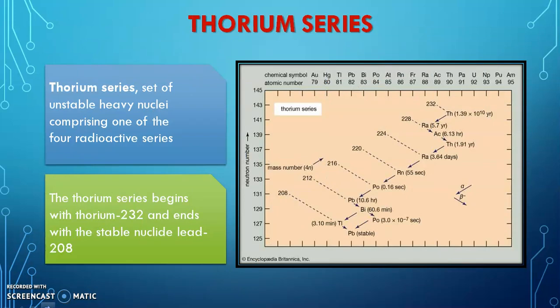Next, coming to our thorium series, here also we are starting with the parent, that is thorium-232. Alpha and beta particle emissions are shown, and here we are getting the stable end product, that is lead-208 — another stable isotope of lead, having atomic number 82 and mass number 208. So this is a 4n mass number series. This is what we call the thorium series.